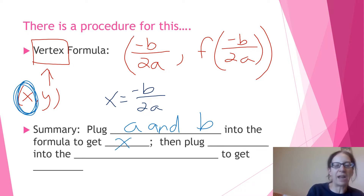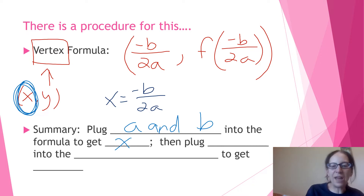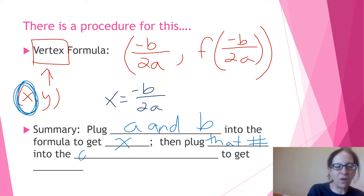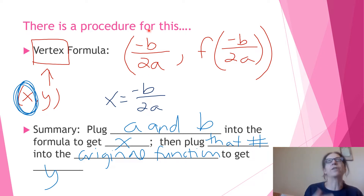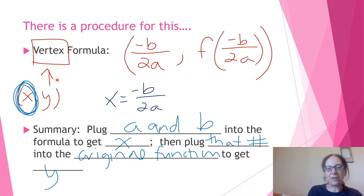To find the y coordinate, you take that x value and plug it into the original function to get the y value. Whatever number you get for x — let's say hypothetically it's a four — you plug that four into the original equation, and that gives you your y value. Then you'll have both your x and y, forming the vertex.